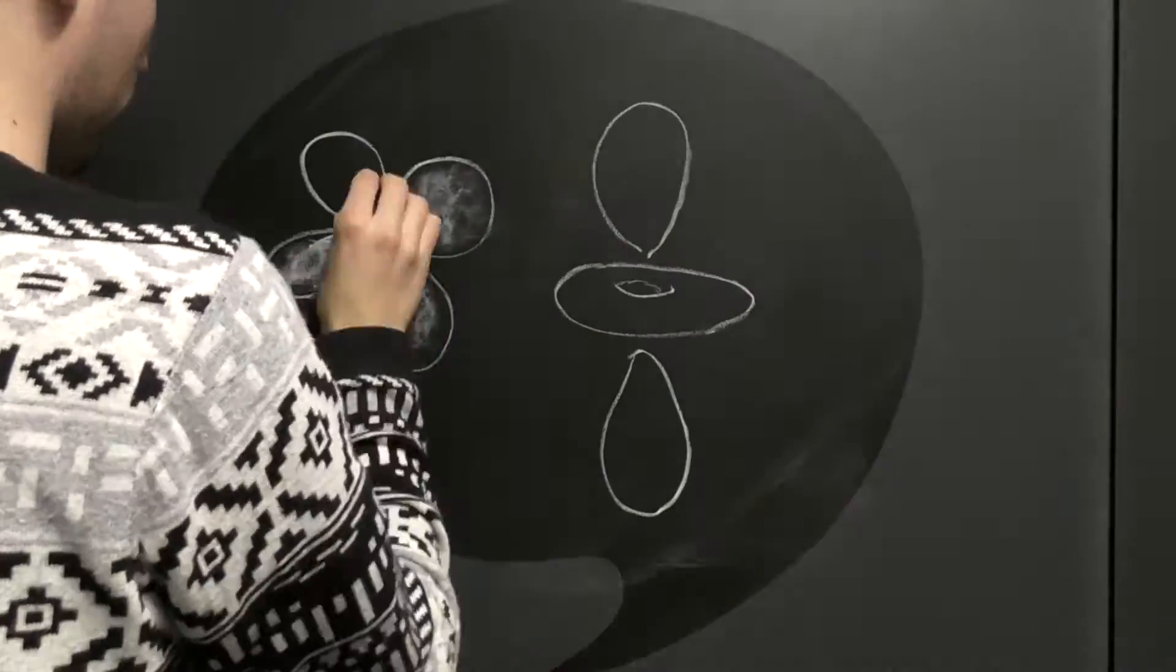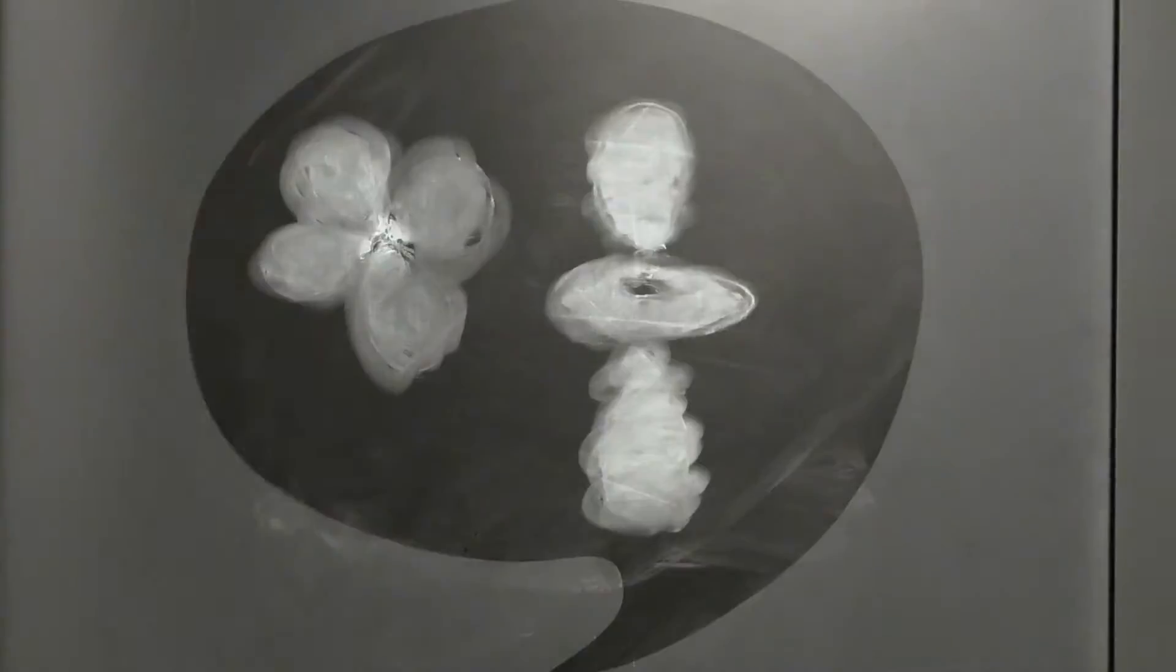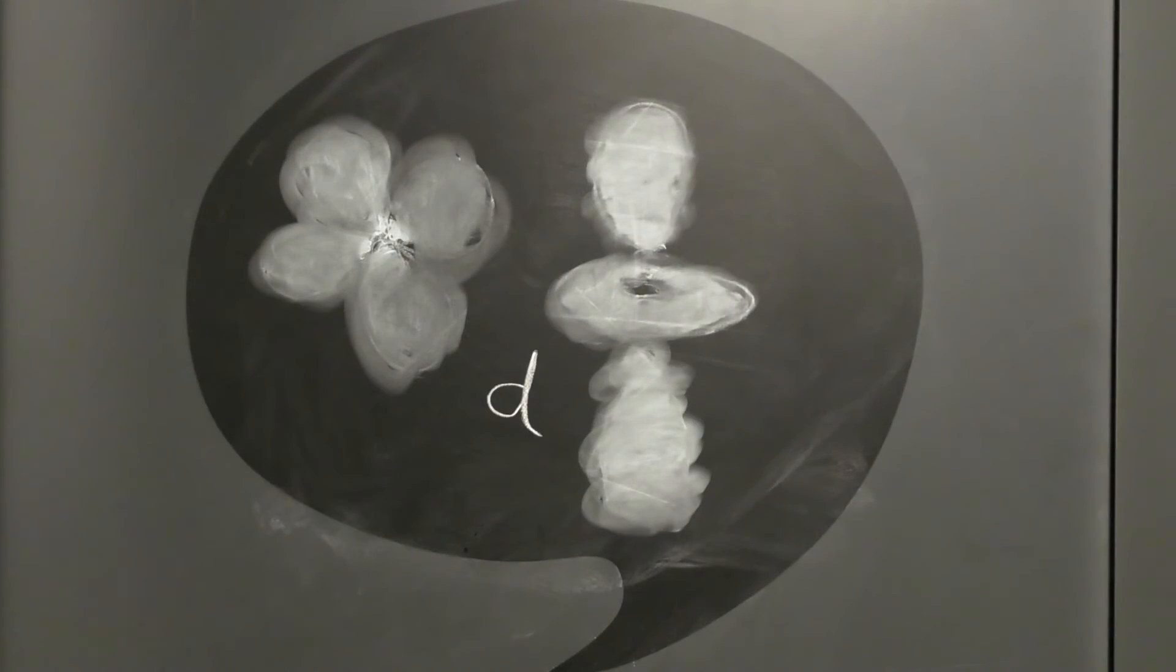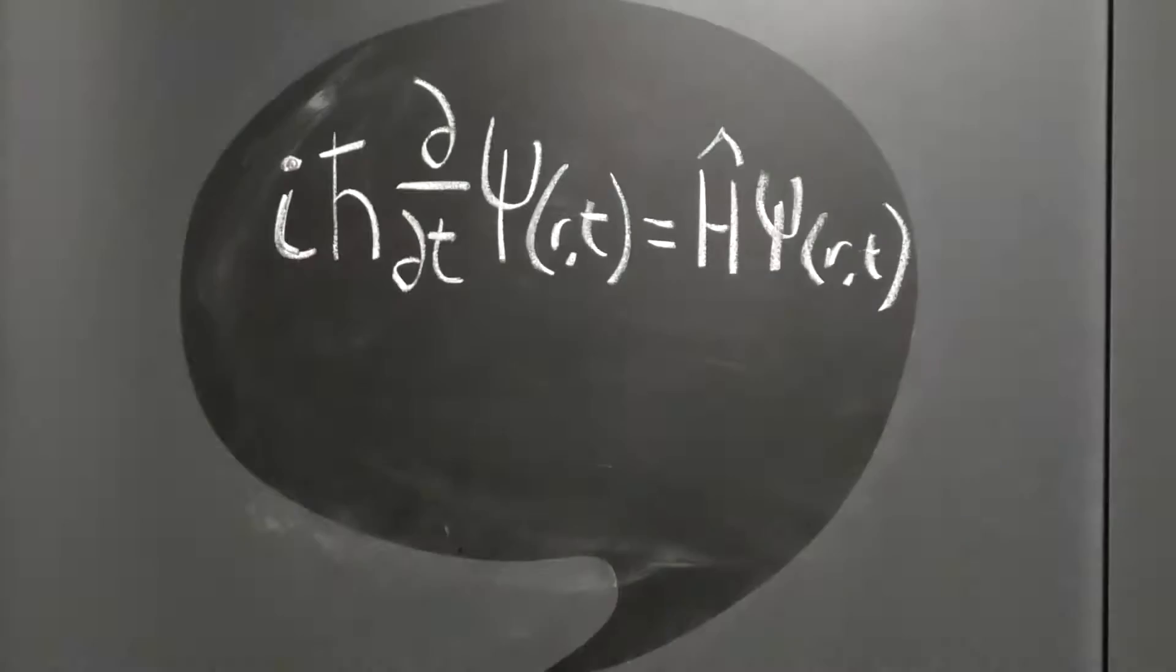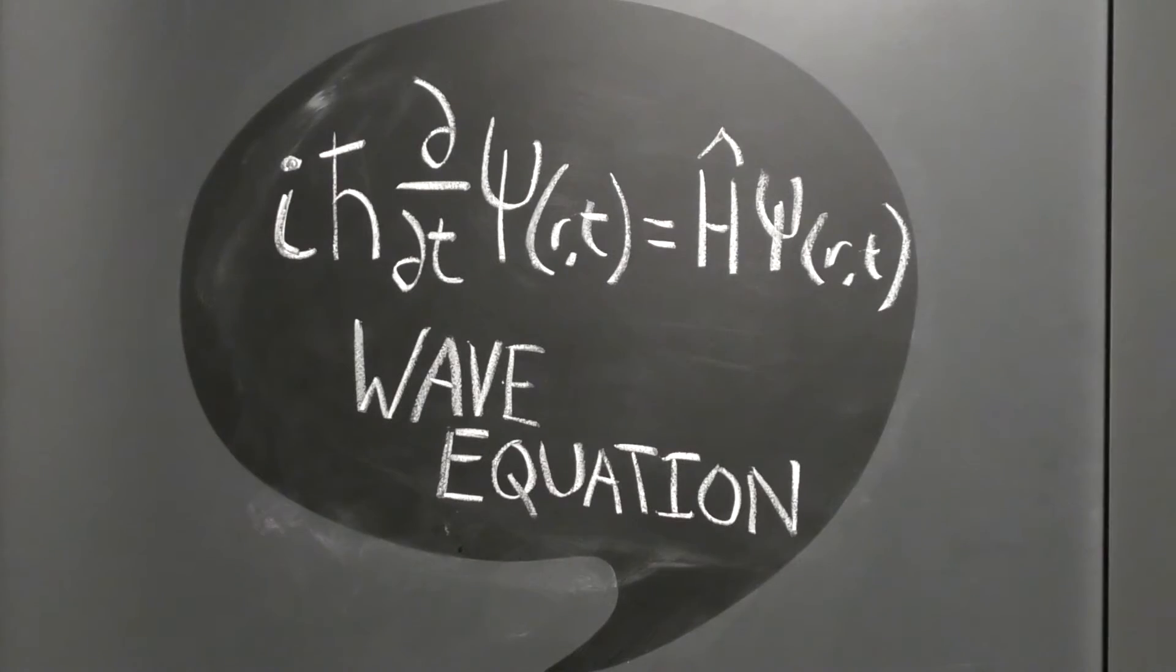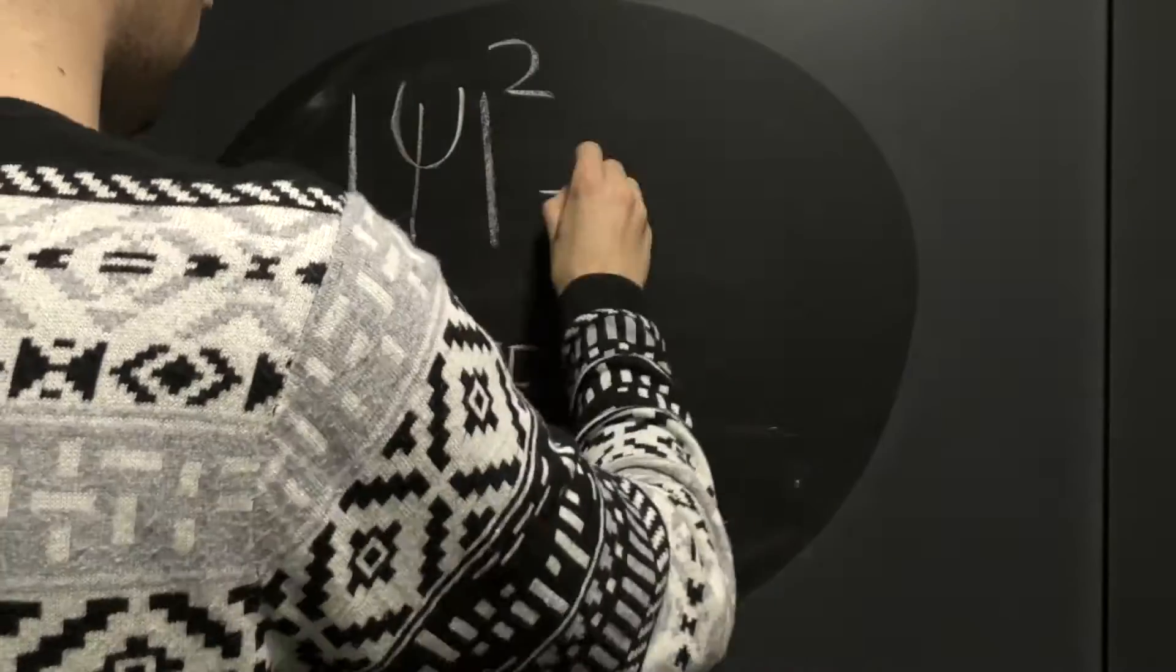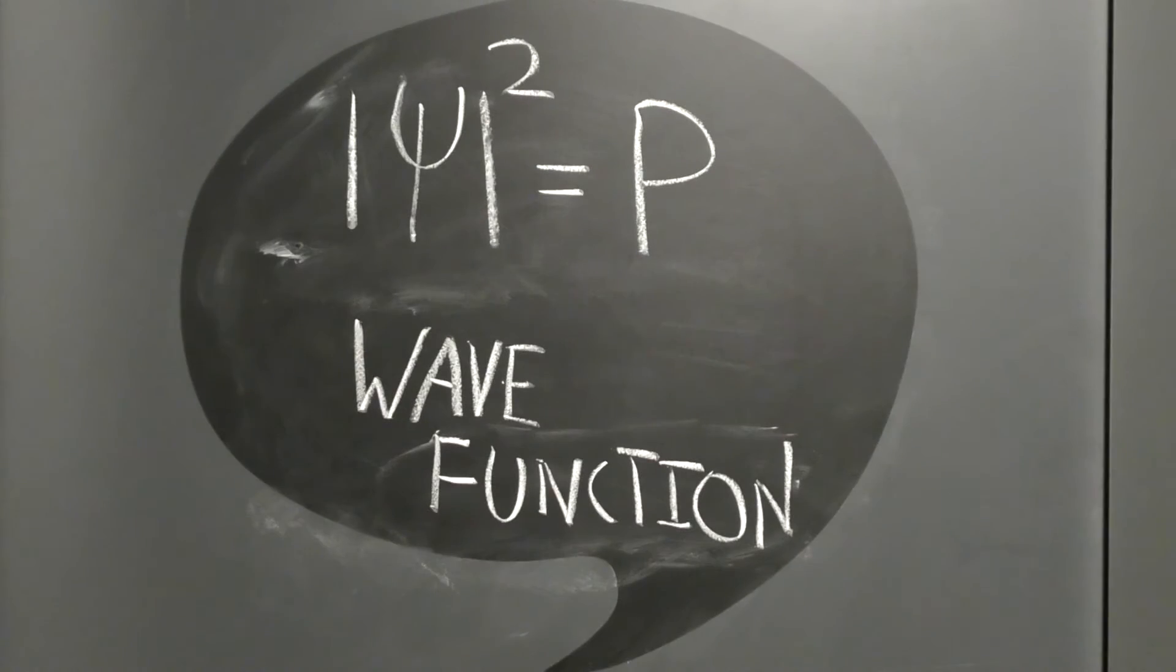But how have we determined these shapes? This is where quantum mechanics comes in, which is the branch of physics that deals with nature at very small scales. The equation governing the shape of electron orbitals is the Schrödinger wave equation. Solving the wave equation gives us a wave function which, when squared, gives us the probability of finding a quantum mechanical particle.